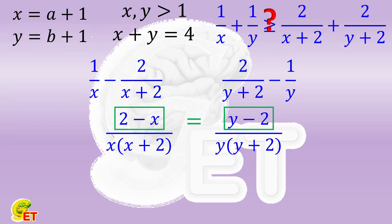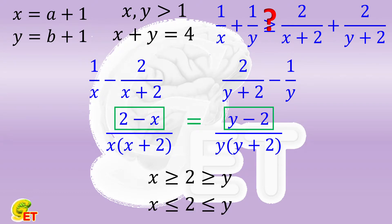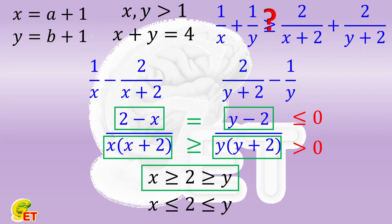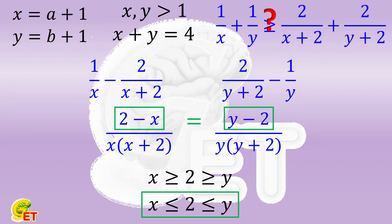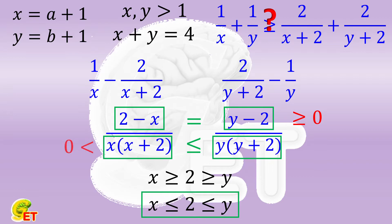There are only two possibilities: x is not smaller than y, or x is not bigger than y. Their arithmetic mean 2 must be in between them. For the first possibility, where x is not smaller than y, the numerator is not bigger than 0, the denominator on the left side is not smaller than that on the right side, and they are both positive. The fractions are non-positive; the larger the denominator, the smaller the absolute value, and the larger the non-positive fraction itself. For the second possibility, where x is not bigger than y, the numerator is not smaller than 0, the denominator on the left side is not bigger than that on the right side, and they are still both positive. The fractions are non-negative; the larger the denominator, the smaller the absolute value, and the smaller the non-negative fraction itself. So the conclusions are the same in both cases.